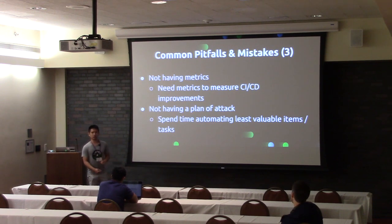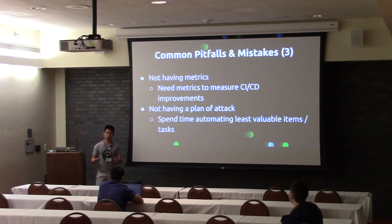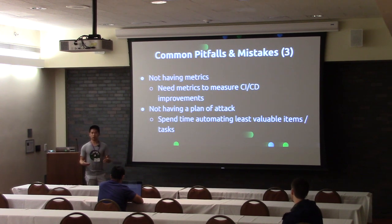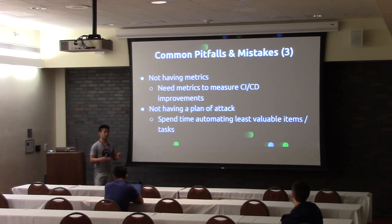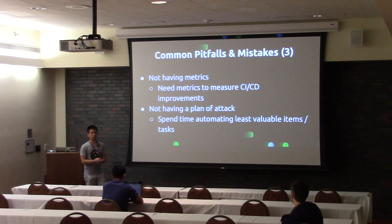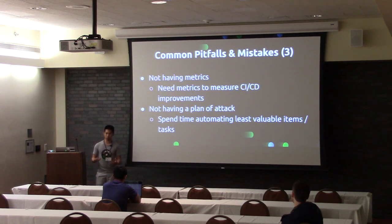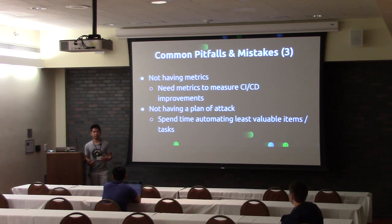Finally, the last pitfall is not having a plan of attack. Because CICD is such a vast, expansive thing — you could automate practically everything in your tool chain, every single project your company works on, ranging from a couple to several thousand. If you're picking up a new tool, you want the best bang for your buck. You're going to want to spend time automating the most valuable items first. Companies who enter the CICD space without thinking about this end up automating things that aren't the most valuable, which affects their opinion of the tool.